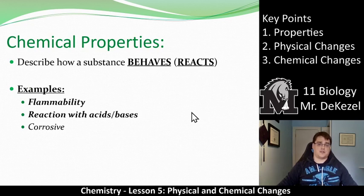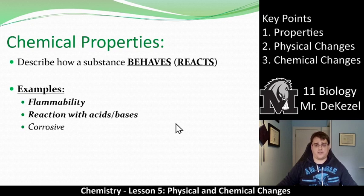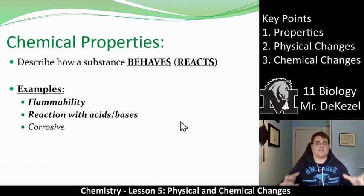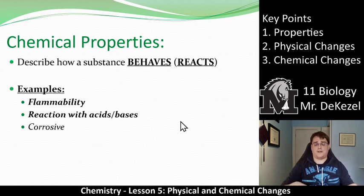Chemical properties describe how the substance behaves or how it reacts. Some examples we gave were: does it catch on fire or not? How does it react? Does it react with acids or bases? Is it corrosive? Does it react with the air? Does it explode when it touches water? Those were chemical properties. So when we talk about changes, we're going to talk about if these properties are changed or not. When we have a physical change, the properties of the initial and final products stay the same.